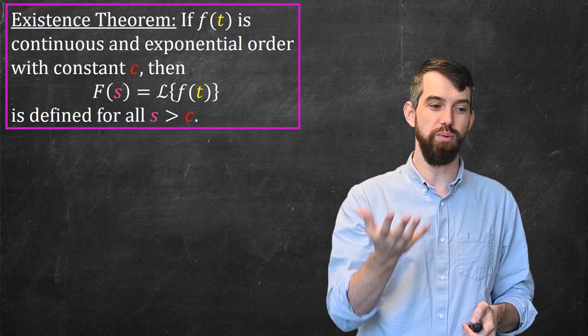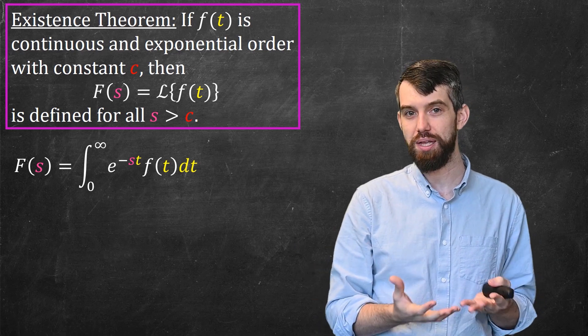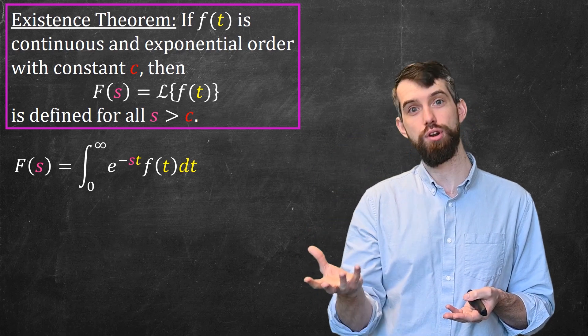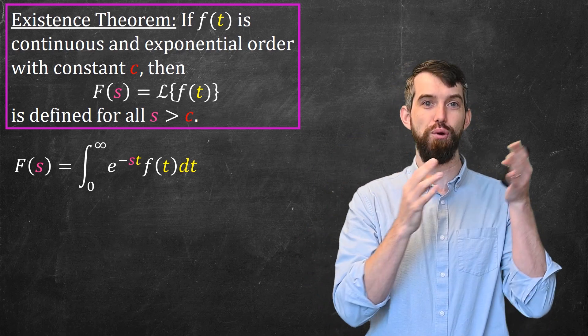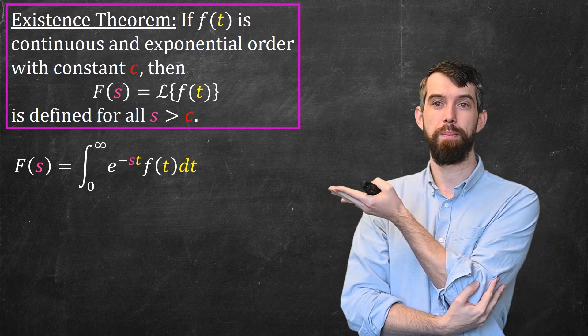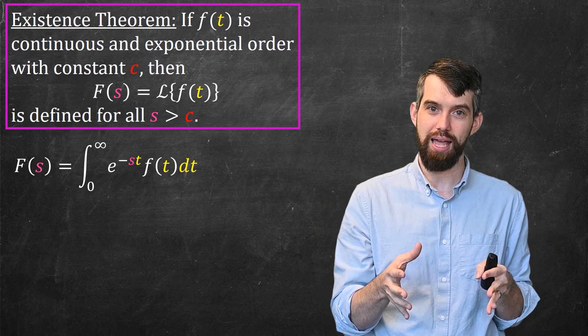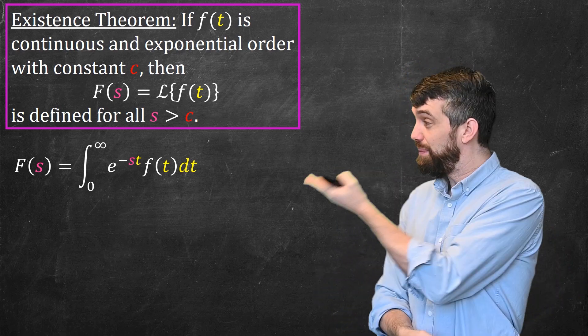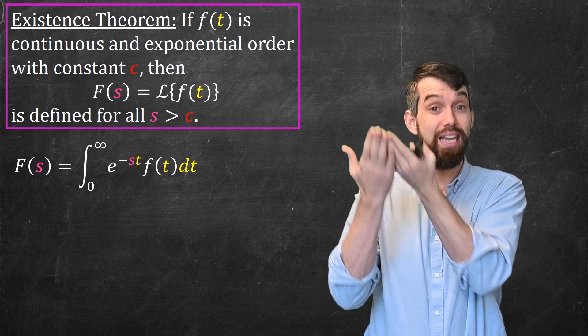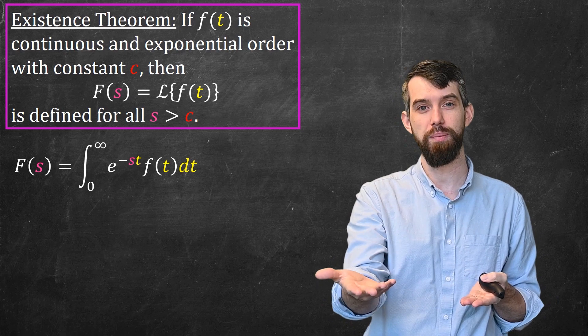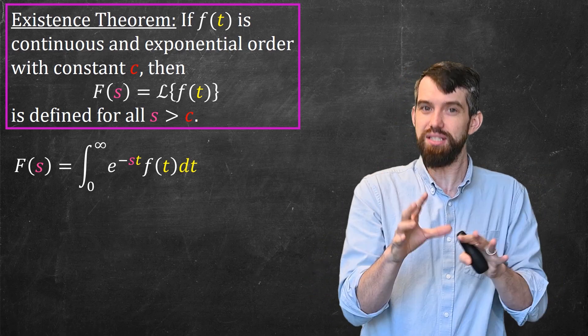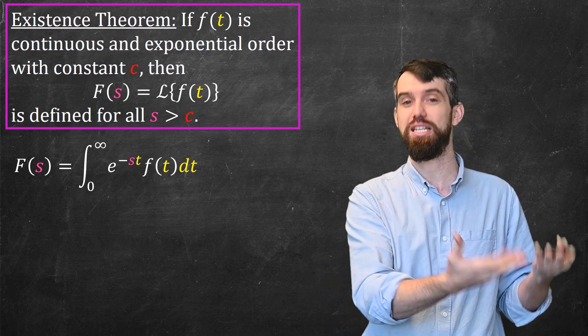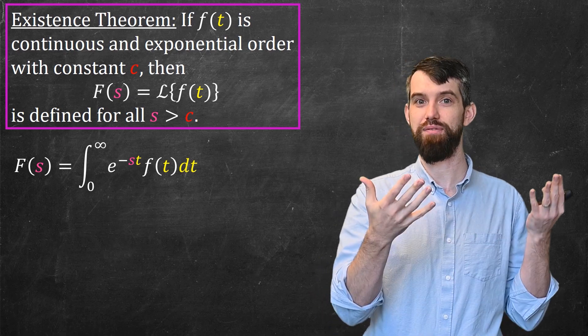To prove this, we really want to address why is it that being of exponential order with constant c is relevant for the existence of this particular integral. This integral is an improper integral with t going to infinity. But the good news is that it's got a negative exponential, the e^(-st) in it, and negative exponentials are going to bring the integrand to zero as t goes to infinity. So the loose idea is that this is going to converge unless your function f was so large that it sort of undid that exponential. And this is why we want to demand that it's of exponential order.